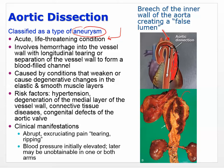That collected blood can clot, forming what's called a false lumen — an open space that's not supposed to be there. This involves hemorrhage into the vessel wall with longitudinal tearing or separation of the vessel wall. A small tear can actually cause more of a rip. It's caused by conditions that weaken or cause degenerative changes in the elastic and smooth muscle layers. Risk factors include hypertension, degeneration of the medial layer, connective tissue diseases, and congenital defects.